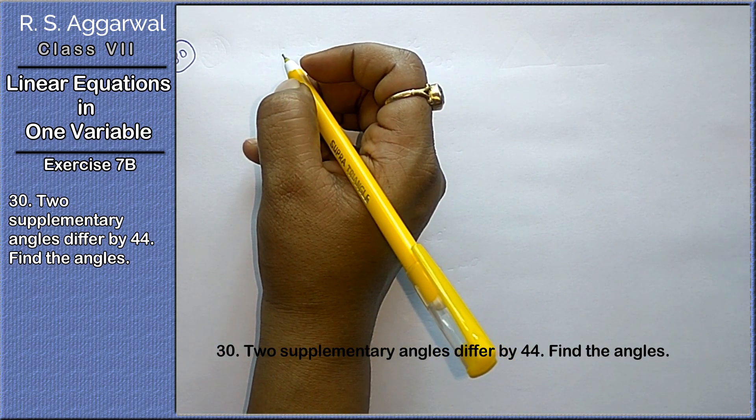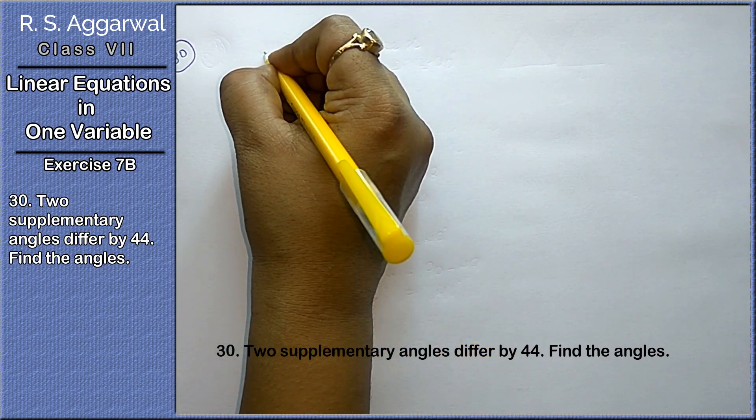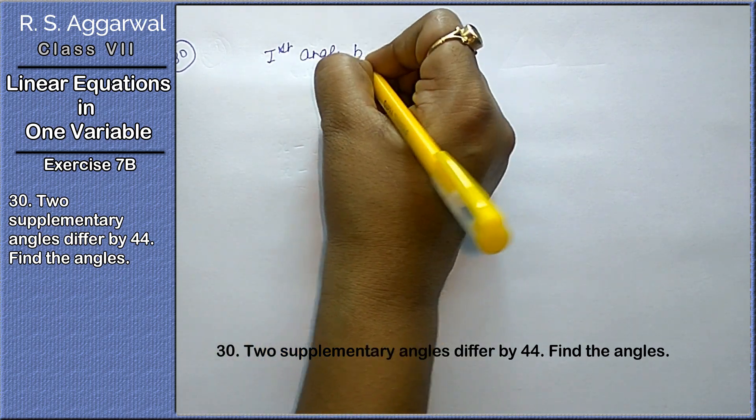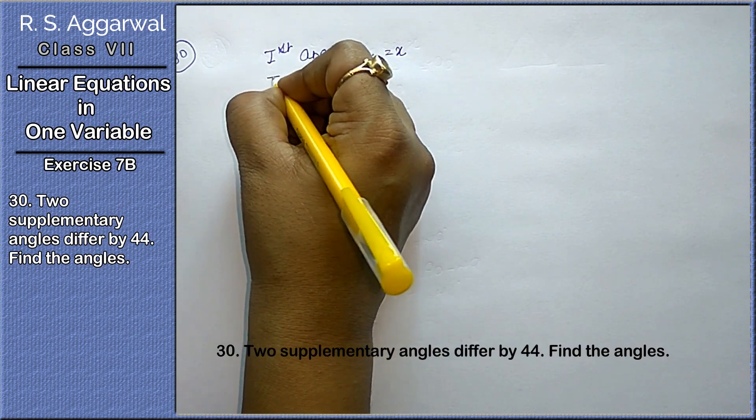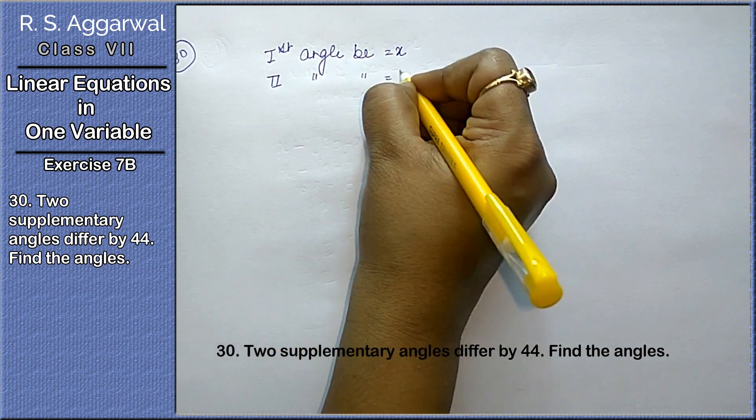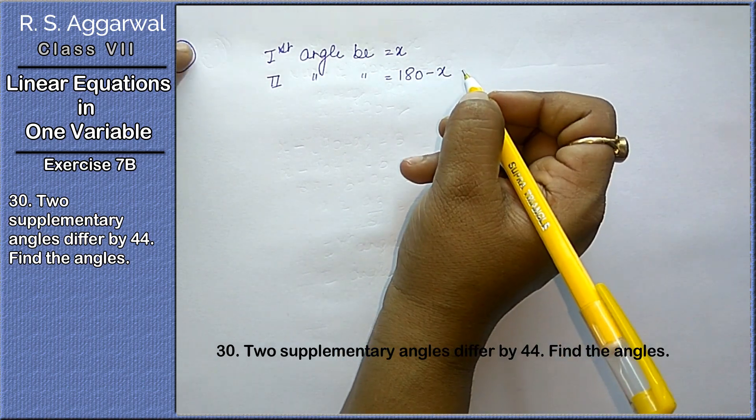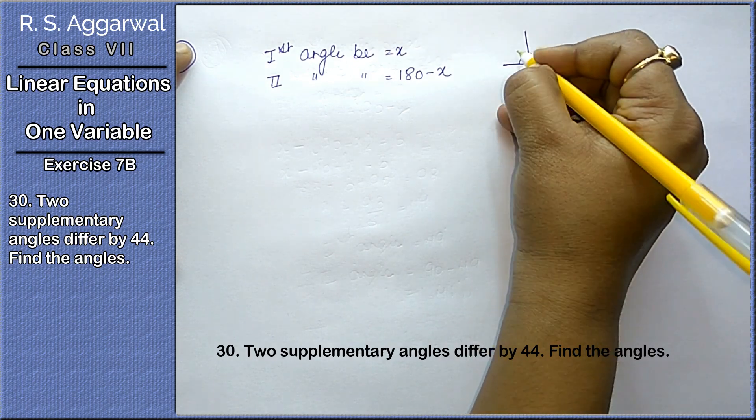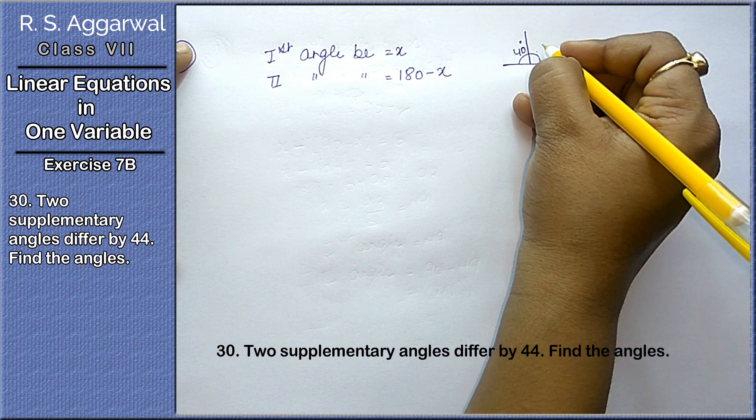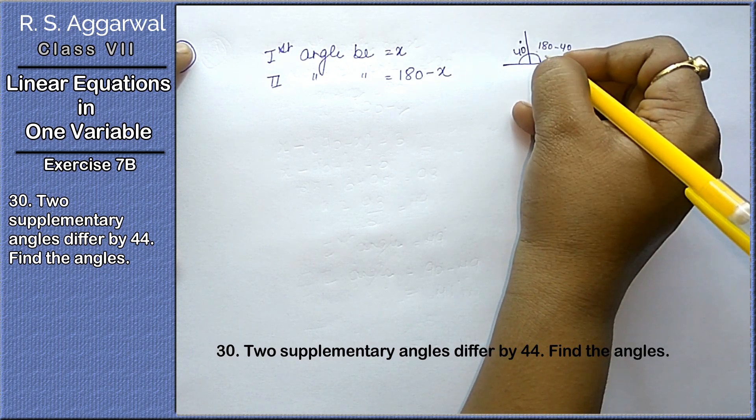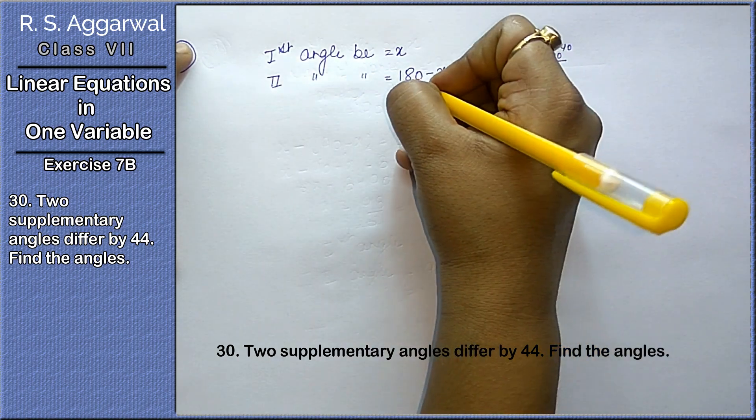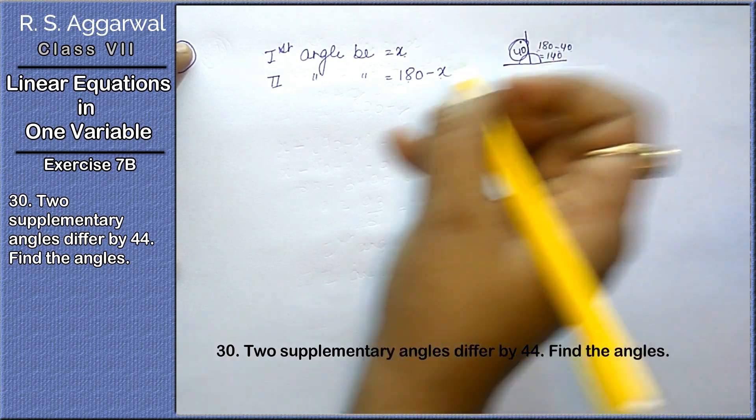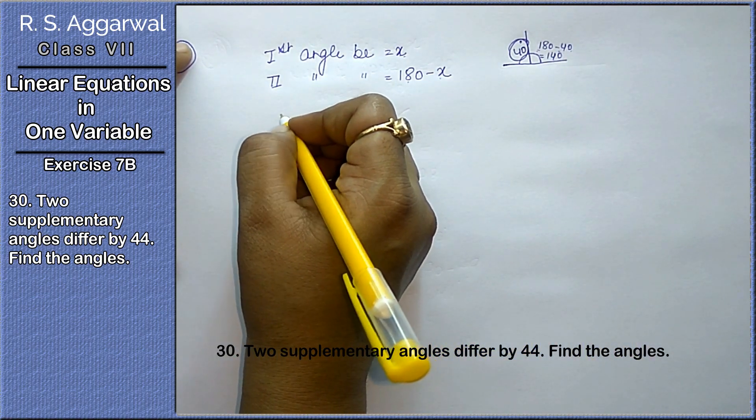Question number 30. Two supplementary angles differ by 44. If first angle be x, if supplementary, then second angle will be 180 minus x. If sum of both is 180 degrees, if this is 40, then the other will be 180 minus 40, that means 140. Similarly, we let it be x, so 180 minus x.